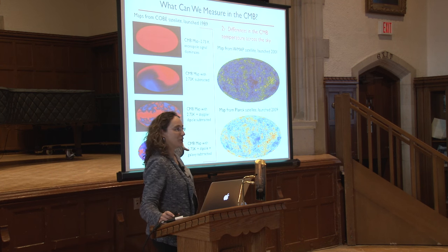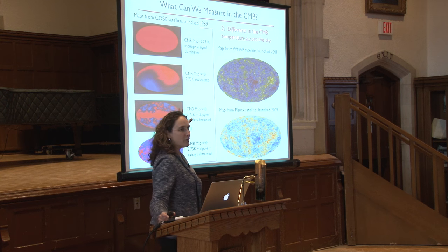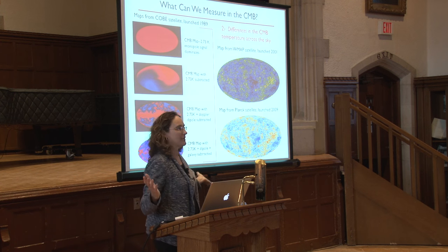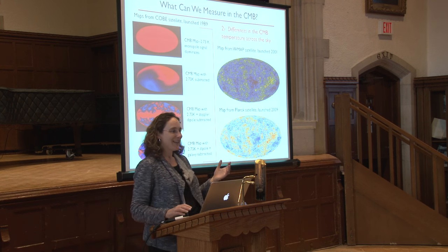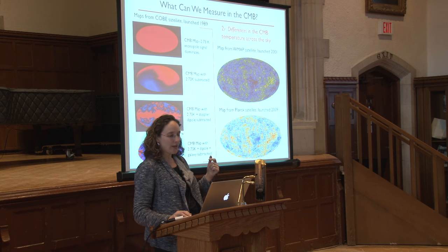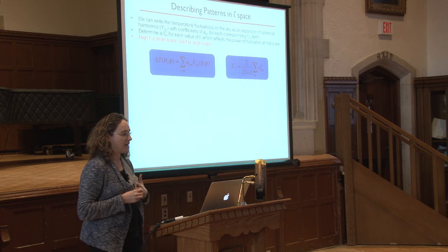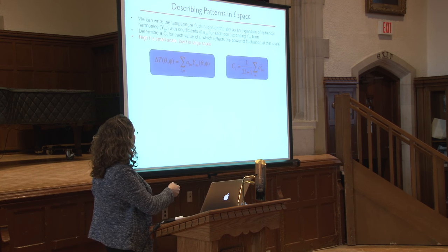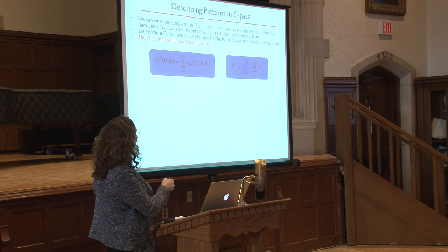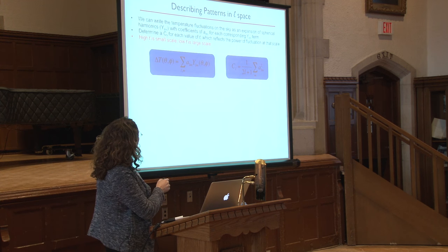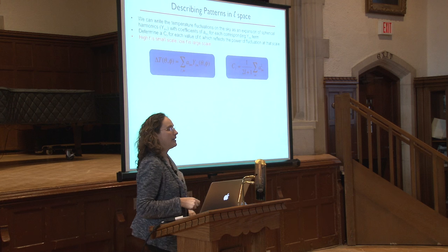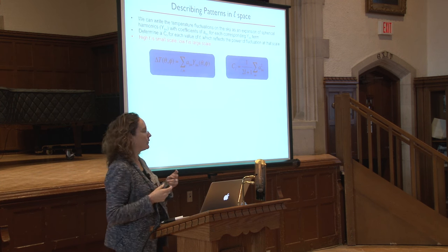You're not going to learn anything quantitative from studying the maps alone. As a physicist, the first thing you'll think is: Fourier transform it! You can describe these patterns in l-space using spherical harmonics. You write the temperature fluctuations on the sky as an expansion of spherical harmonics with coefficients a_lm, and you determine what this coefficient is for each value of l — it tells you how much power is on that angular scale.